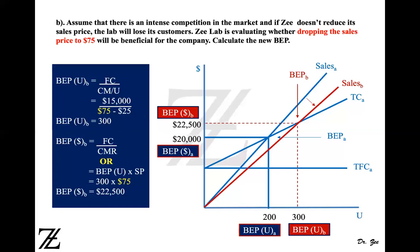Now in part B, assume that market conditions require a reduction in sales price. Z-Lab is evaluating whether to drop the sales price to $75, keeping other things constant. The break-even point in units is fixed cost over contribution margin per unit. Nothing changes in fixed cost or variable cost per unit. However, the sales price dropped from $100 to $75, so $75 minus $25 is $50. The denominator shrinks, so the break-even point increases to 300 — you now have to sell 300 units.